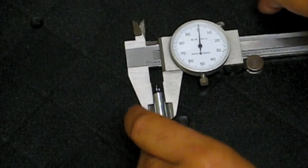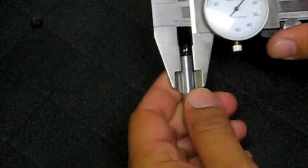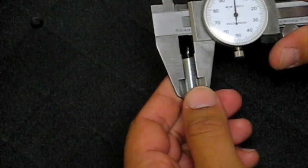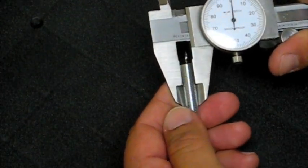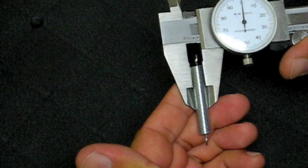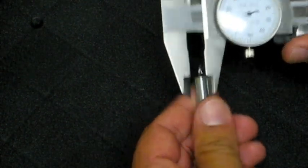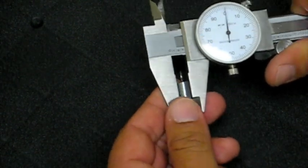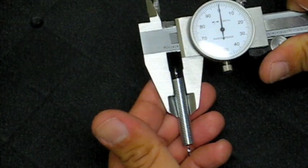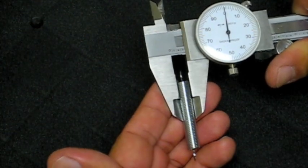How to measure an extension spring. First we'll gather the extension spring and put it vertically in the calipers. This particular extension spring measures 300 thousandths OD. We'll re-verify by measuring the other side: 300 thousandths OD.